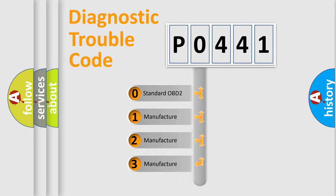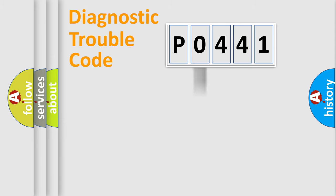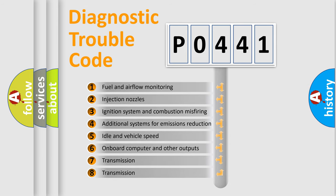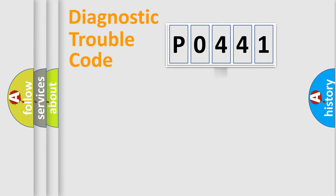If the second character is expressed as zero, it is a standardized error. In the case of numbers 1, 2, 3, it is a manufacturer-specific expression of the car error. The third character specifies a subset of errors. The distribution shown is valid only for the standardized DTC code.